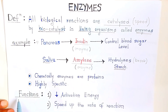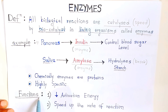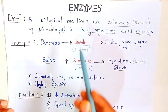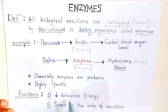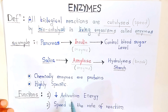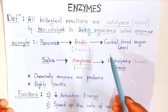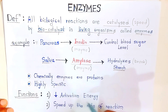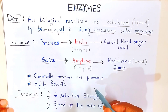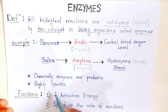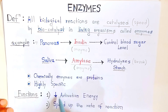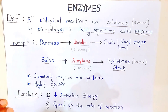Now, what are the functions of the bio-catalyst as an enzyme? First, it decreases the activation energy. If any biochemical reaction requires more energy, the presence of a bio-catalyst decreases the activation energy — a lesser amount of energy is required to complete the reaction. Second function: it speeds up the rate of the reaction. These two are very important functions of the enzyme.